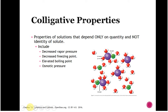We do not care if it's NaCl, KBr — it doesn't matter. All that matters is the total number of solute particles that are present. The more particles you have in solution, the more you're going to see a decrease in vapor pressure, a decrease in freezing point, an elevated boiling point, and a change in osmotic pressure.